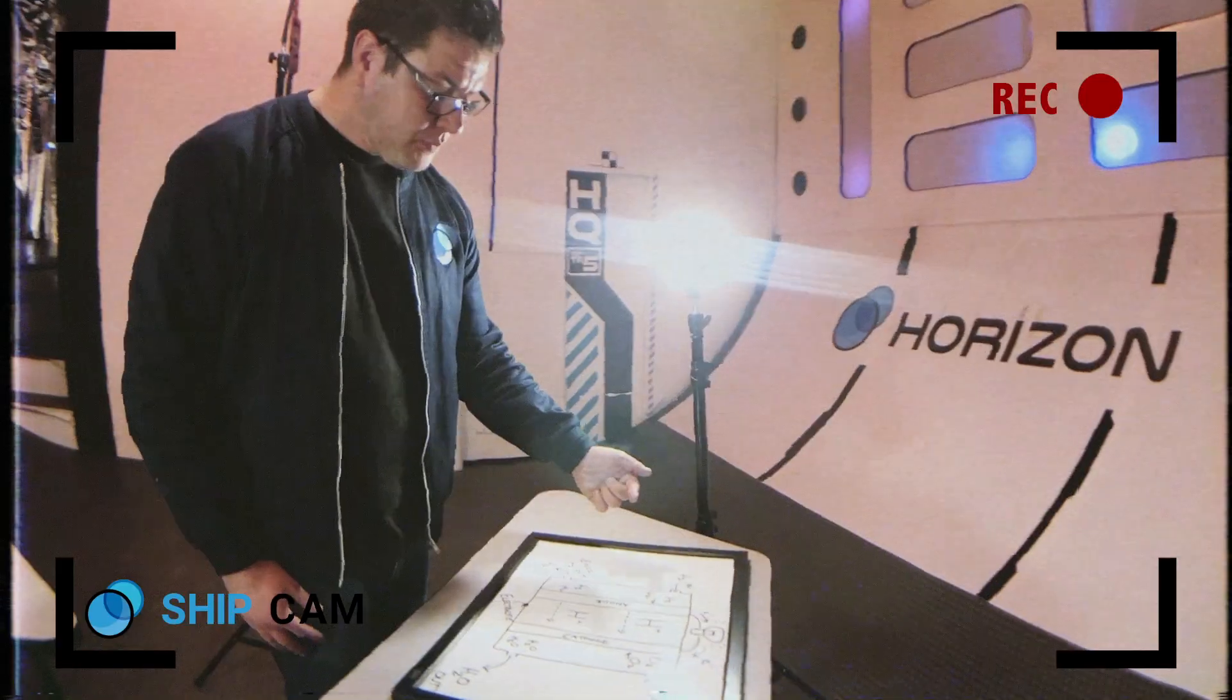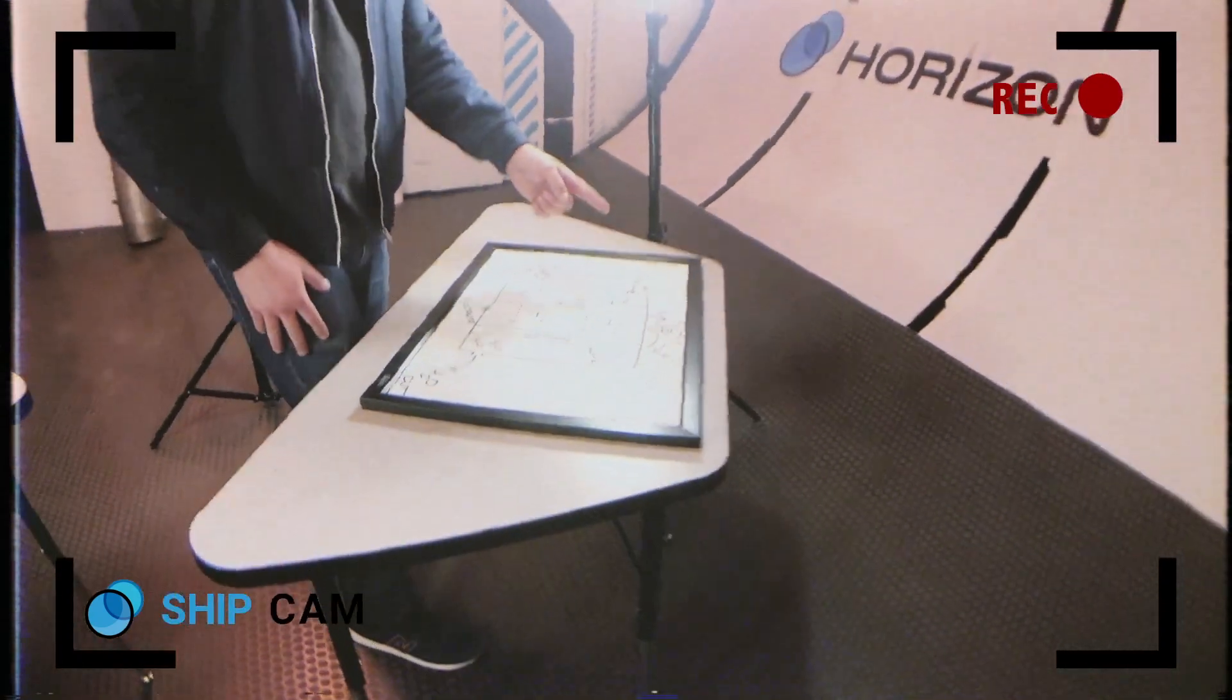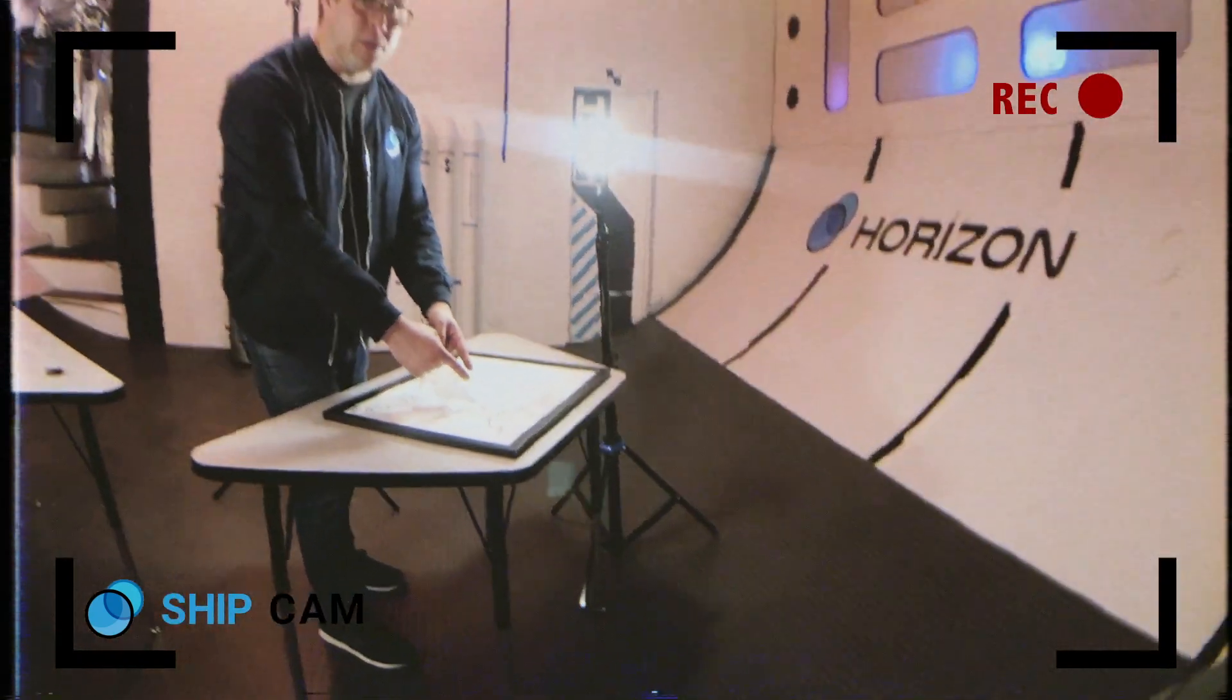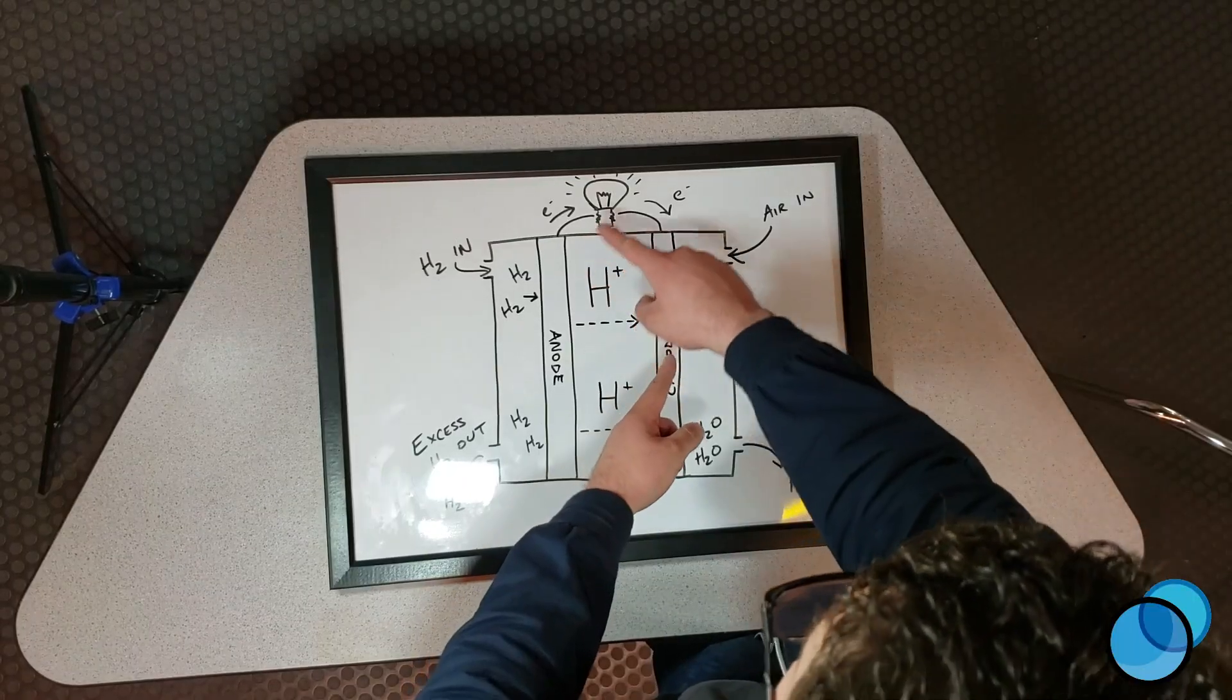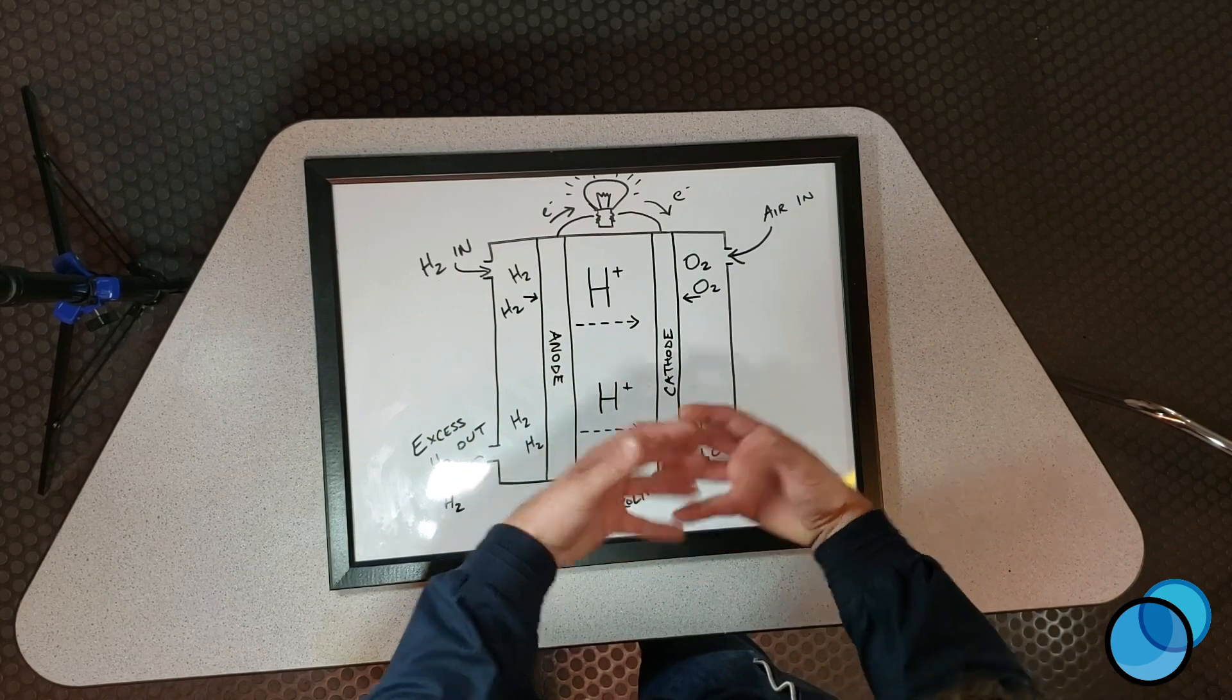Now the hydrogen is going through the electrolytic layer, the positive hydrogen ion, and that's meeting up with oxygen in the cathode side. Now from here, the electrons are coming back through and the electrons are allowing the hydrogen and the oxygen to bond together to make water.